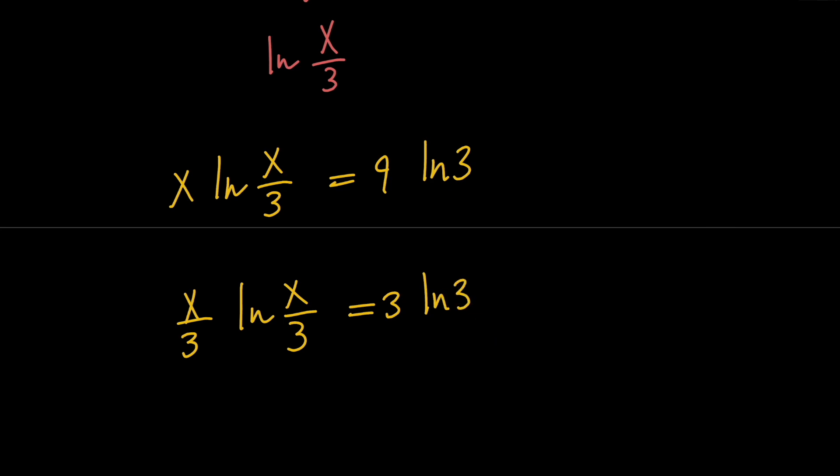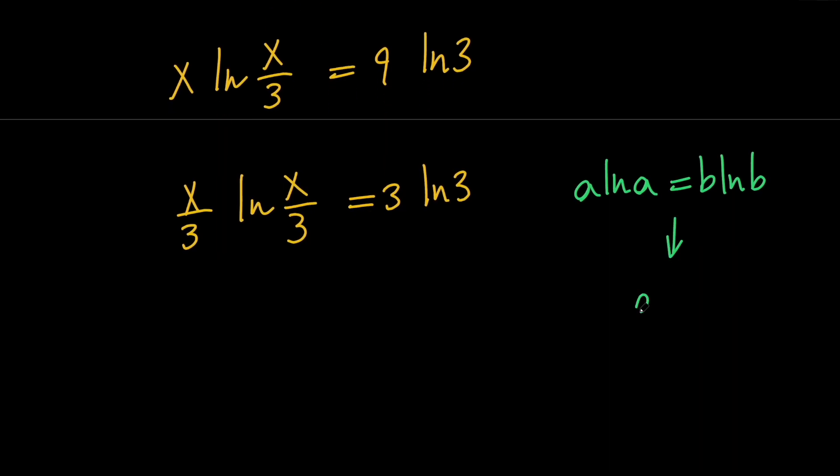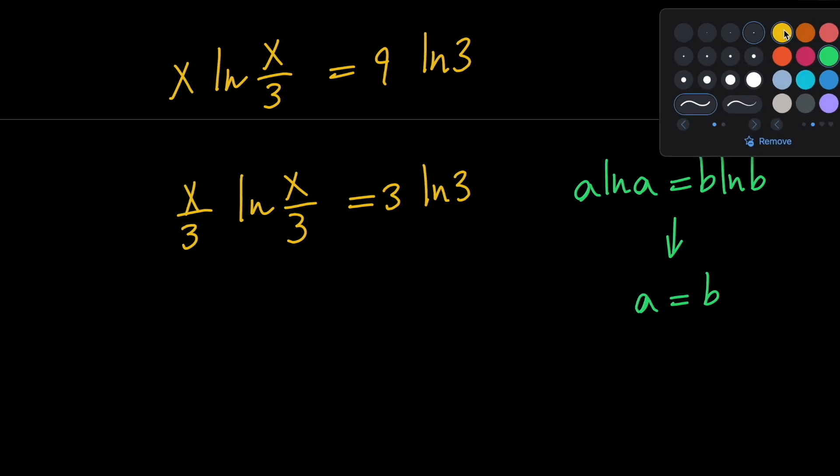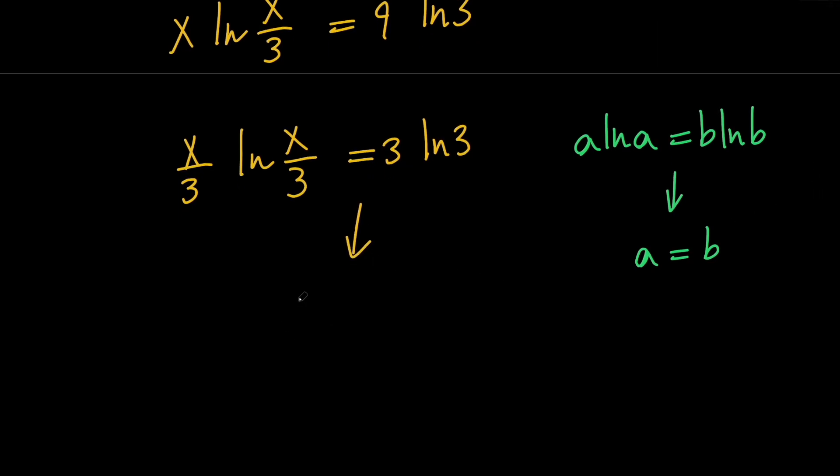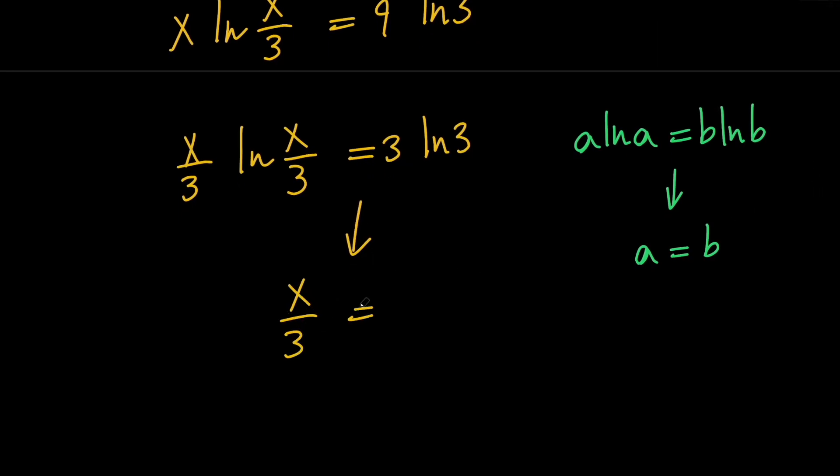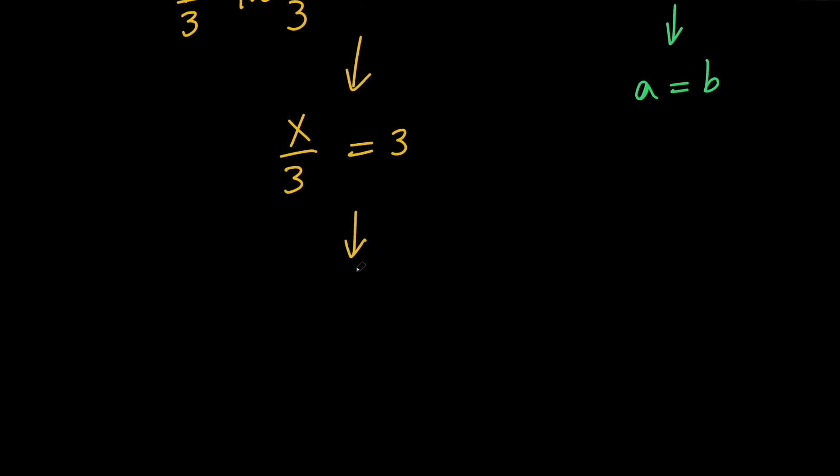Now, we all know that if a times ln a equals b times ln b, we can go ahead and say that a equals b. So, based on this, our equation implies that x over 3 should equal 3, which means that x should equal 9.